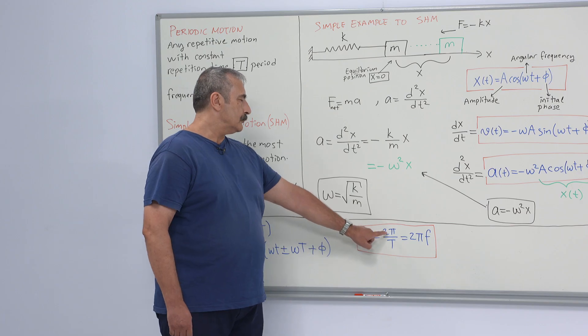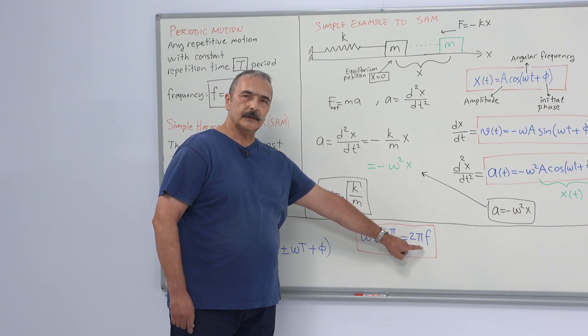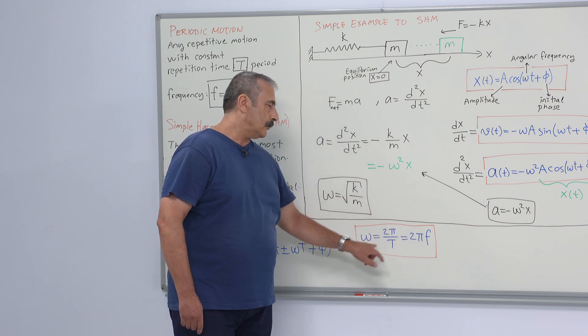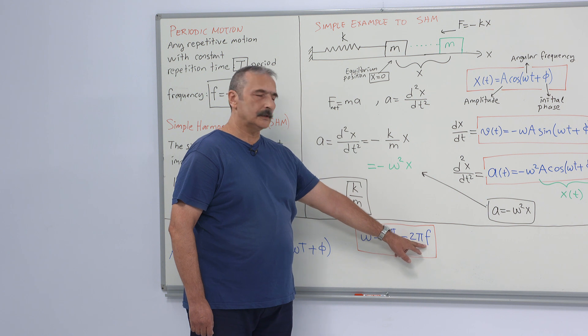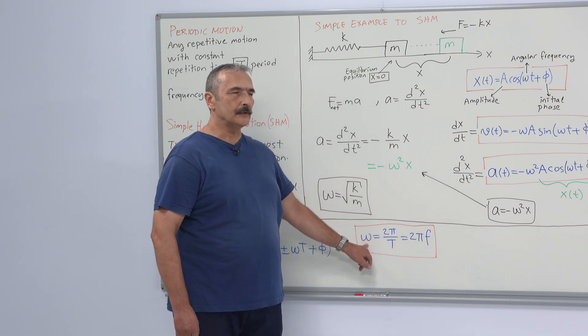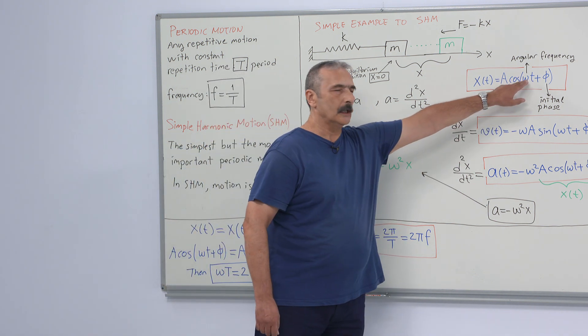Omega equals 2 pi over the period, or 2 pi times the frequency. Since omega is proportional to the frequency, we call it as angular frequency, also because of its angular variable.